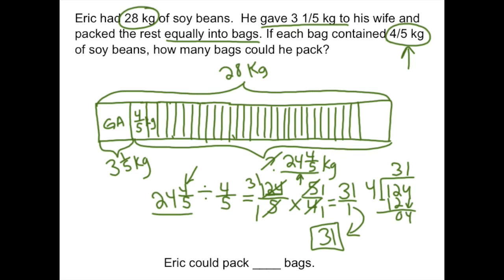We can break it up into 31 groups, each containing four-fifths kilograms. So Eric could pack 31 bags. If you got stuck on a step or something was confusing, rewind the video and rewatch that part.